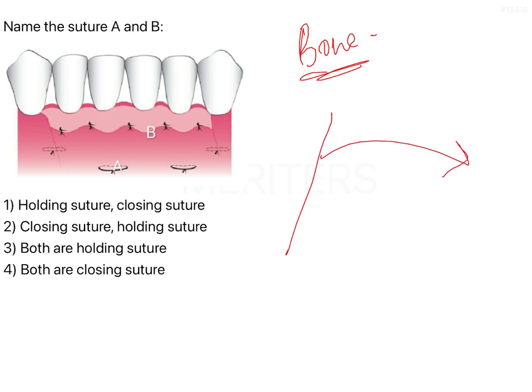If this is the bone, this is my mucosa, and this is my periosteum. There is one incision that is given and then with the periosteal elevator, we start reflecting both the mucosa as well as the periosteum.